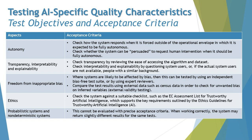Probabilistic and non-deterministic systems cannot be evaluated with precise acceptance criteria. When working correctly, the system may return slightly different results for the same test input. The reason is that when you talk about probability, there is no single right answer — there could be several possible correct answers. Therefore, we cannot have a very specific acceptance criteria; as long as the system is working correctly and giving valid possible results, it is acceptable.